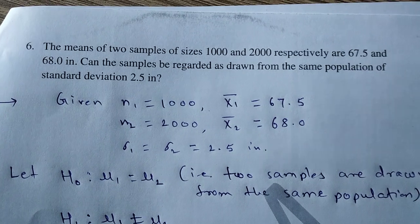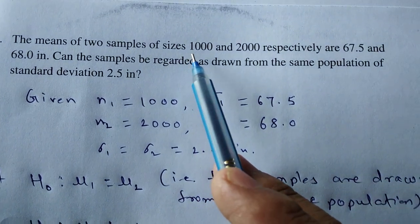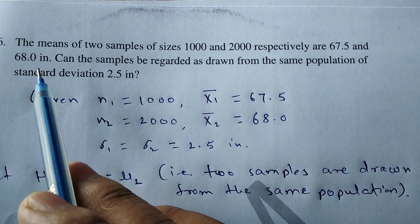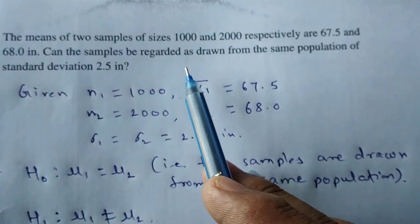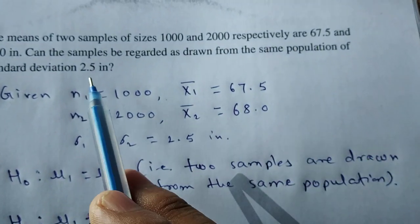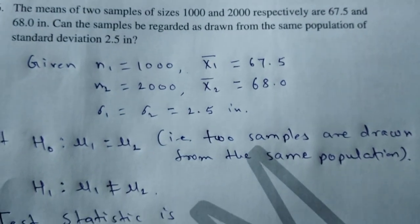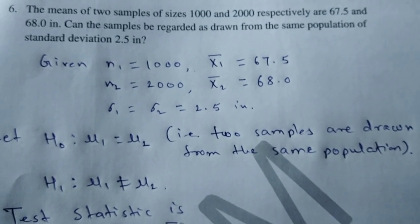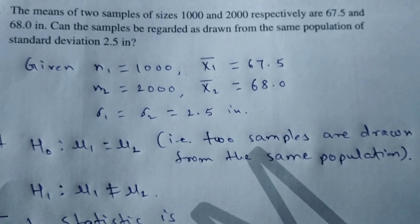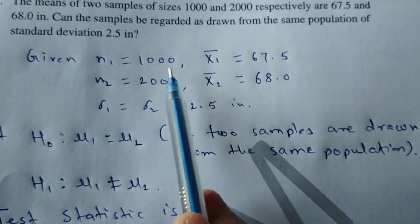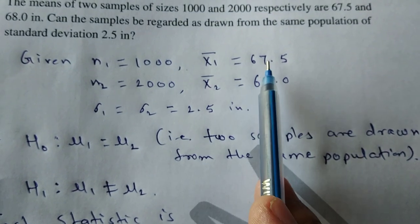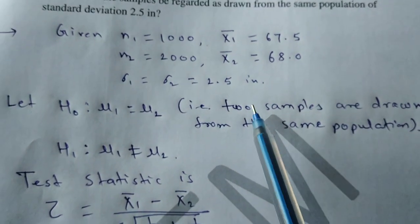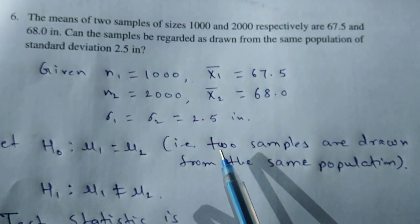We will solve this example. The means of two samples of sizes 1000 and 2000 respectively are 67.5 and 68 inches. Can the samples be regarded as drawn from the same population of standard deviation 2.5 inches? Given: n1 is 1000, n2 is 2000, mean of first sample is 67.5, mean of second sample is 68, and the population standard deviation sigma is 2.5.